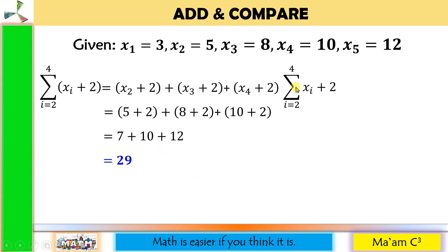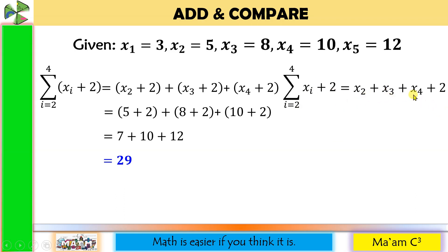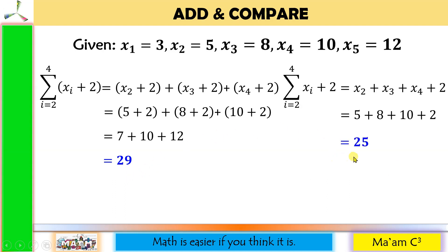Now for the second expression — this is the summation of X sub I, I going from 2 to 4, and then we add 2 at the end. So we evaluate the summation first: X sub 2 plus X sub 3 plus X sub 4, then add 2. Substituting: 5 plus 8 plus 10 is 23, and 23 plus 2 is 25. Notice that there is a difference in our answers, so you have to be careful in evaluating summation.